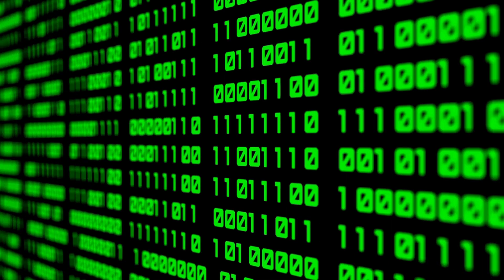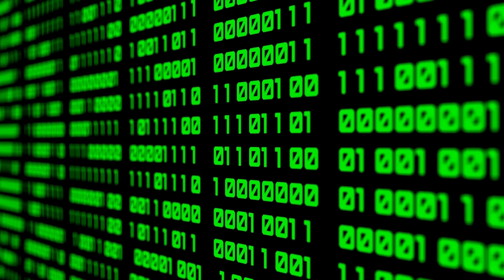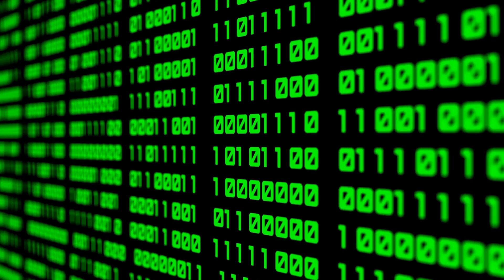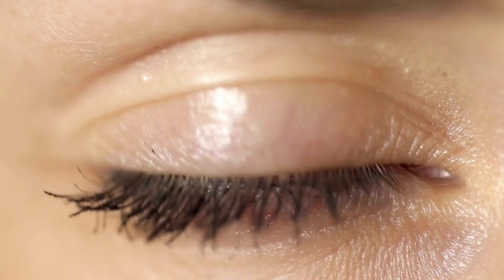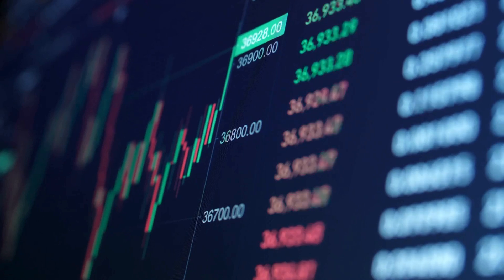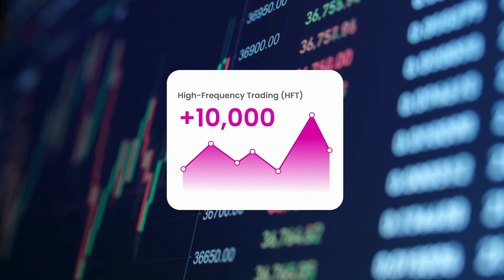Cold, calculating machines that can execute thousands of trades in the time it takes you to blink. Literally. A single blink takes about 300 milliseconds. In that time, the fastest trading algorithms can execute over 10,000 trades.